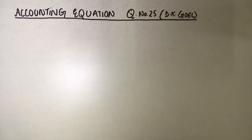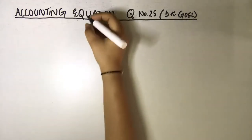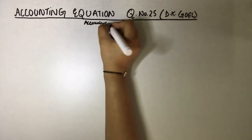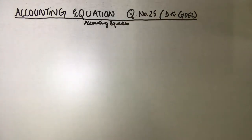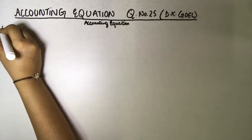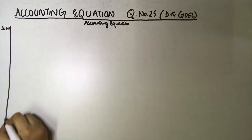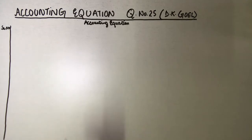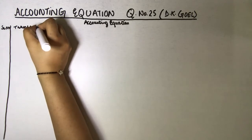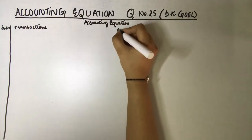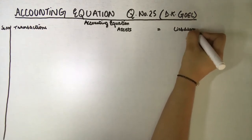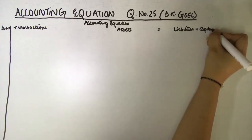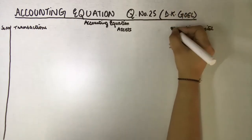First, we will create the format for the accounting equation. We write 'Accounting Equation' at the top. The format has: serial number, then transactions, then asset equals to liabilities plus capital. That is our format.